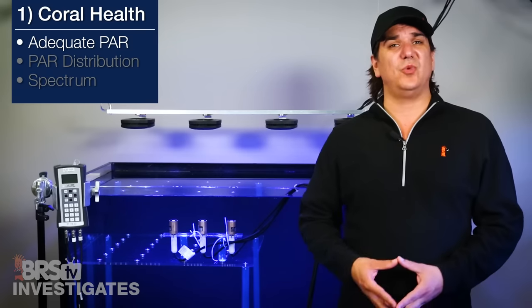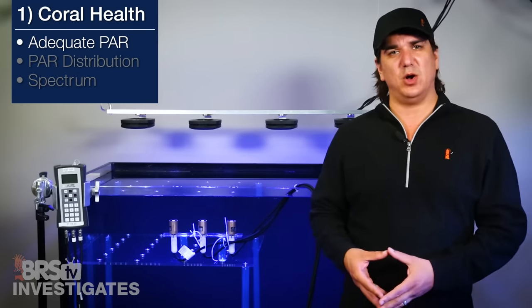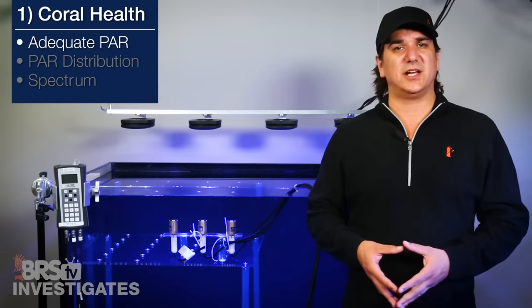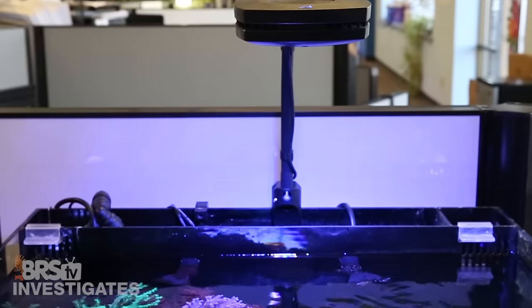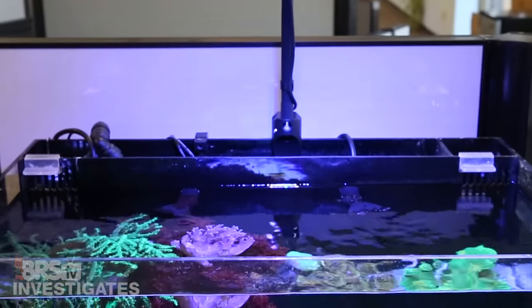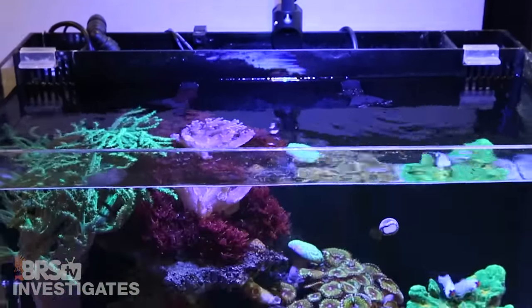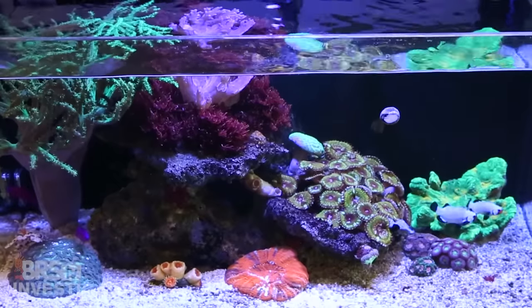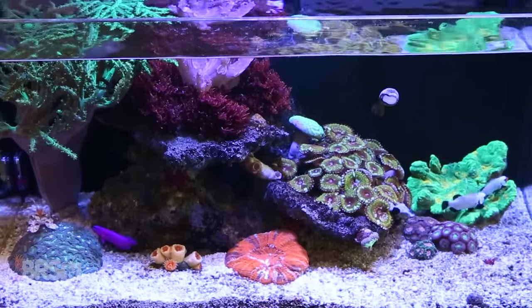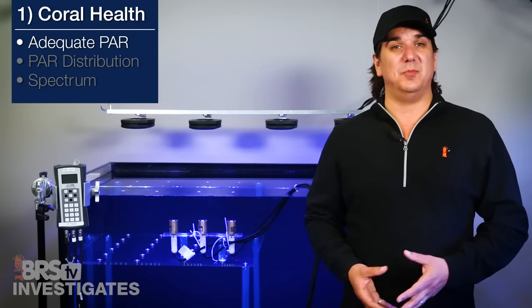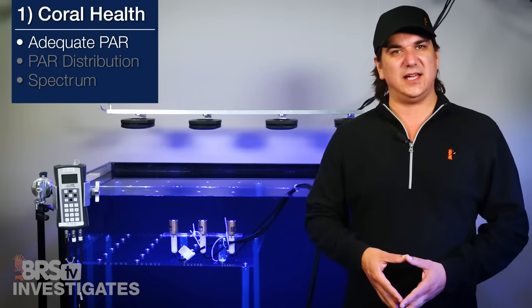All in all I think you could run an SPS tank on these as long as it was small like a 12 inch cube or a pair on something like a Nuvo 20, but honestly I think a lot of reefers might be surprised by how well a single low cost light like this could do on a two foot cube as long as the only goal was an LPS tank. Might be visually a bit dim but still a nice low cost method of lighting a reef tank.